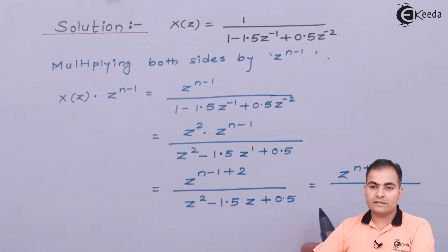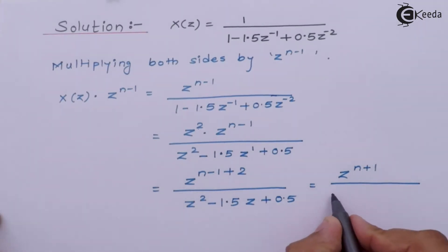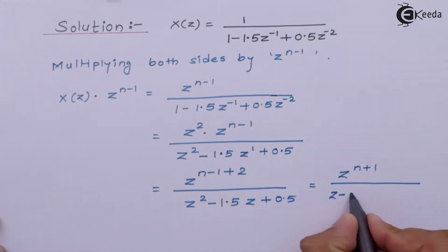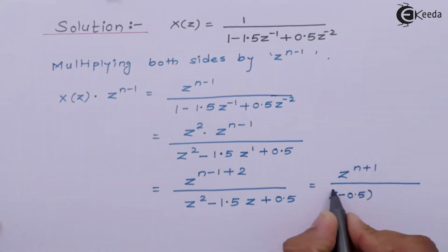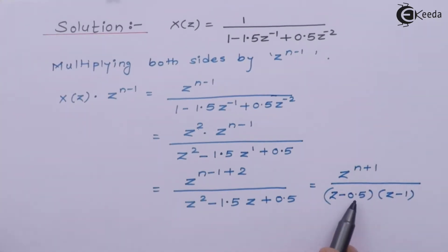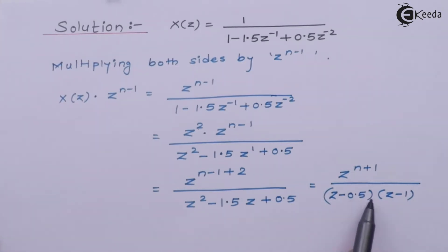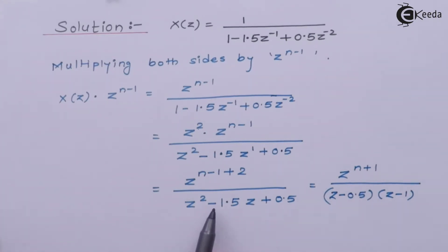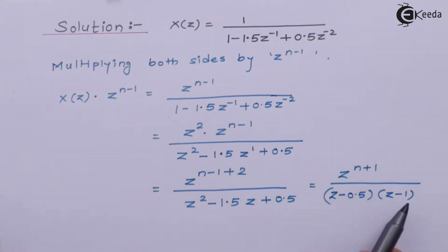The factors of Z² − 1.5Z + 0.5 are (Z − 0.5)(Z − 1). Multiplying −0.5 by −1 gives +0.5, and adding −0.5 and −1 gives −1.5, which matches the middle coefficient.